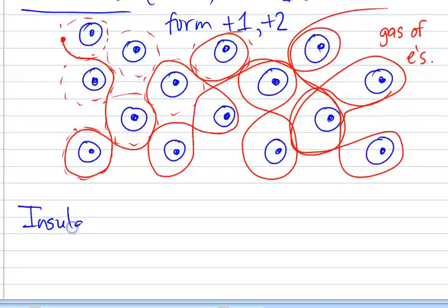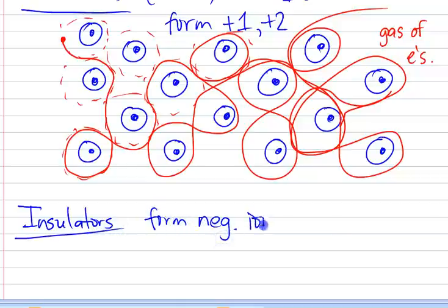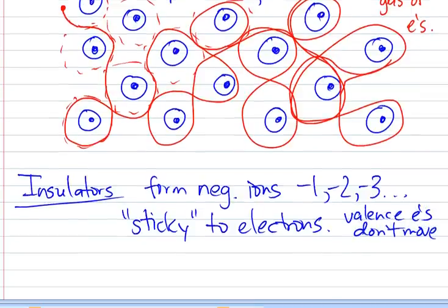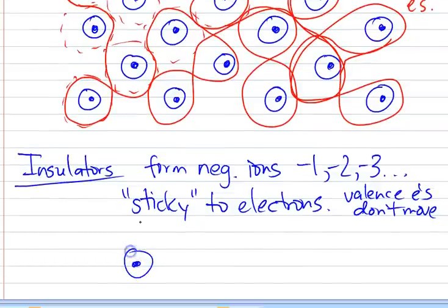Next up, we have insulators. Now insulators are typically materials that form, not always, but most of the time, negative ions. So we're talking about negative one, negative two, negative three. In other words, insulators really want to hold on to their electrons. And that's important, because they are sticky to electrons. And so what that means is that their valence electrons don't really move. They can kind of slide back and forth a little bit. If I have a nucleus, and I have the inner electrons, and then my outer ones, they can kind of move from one point to another, but they can't really go from one atom to the next. They're very tightly bound. And what this means is that these materials don't allow the flow of electrons. So these are insulators.